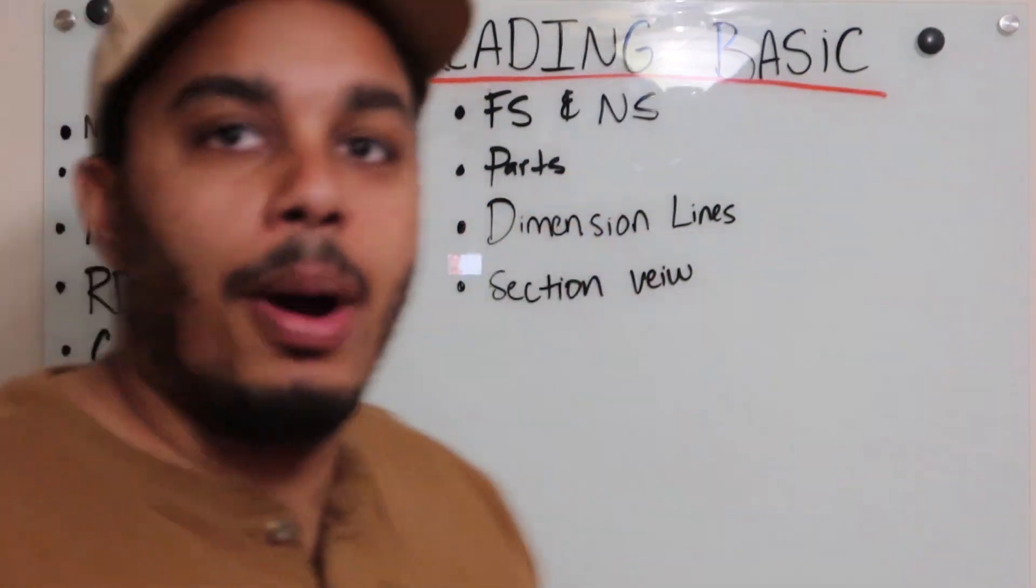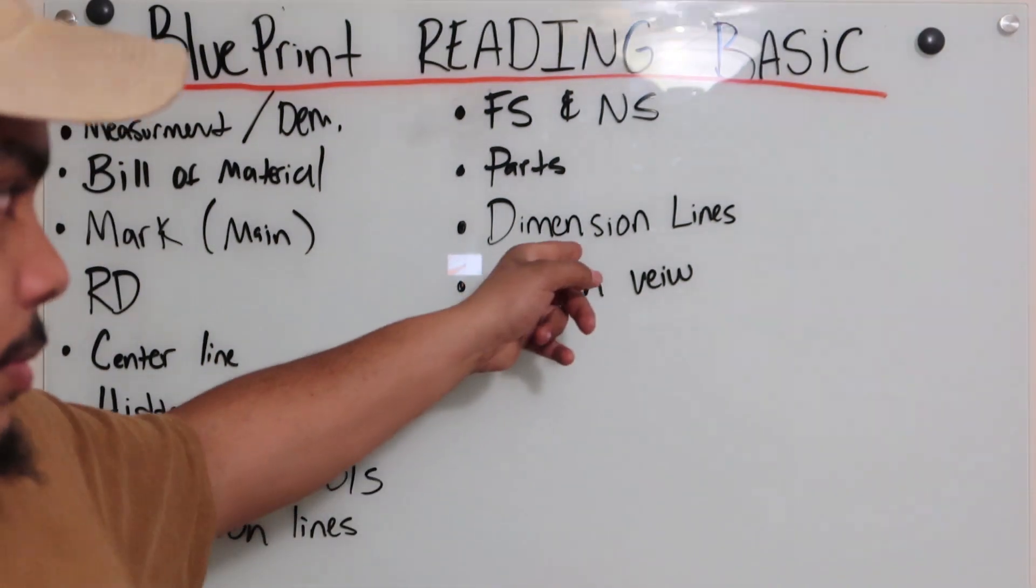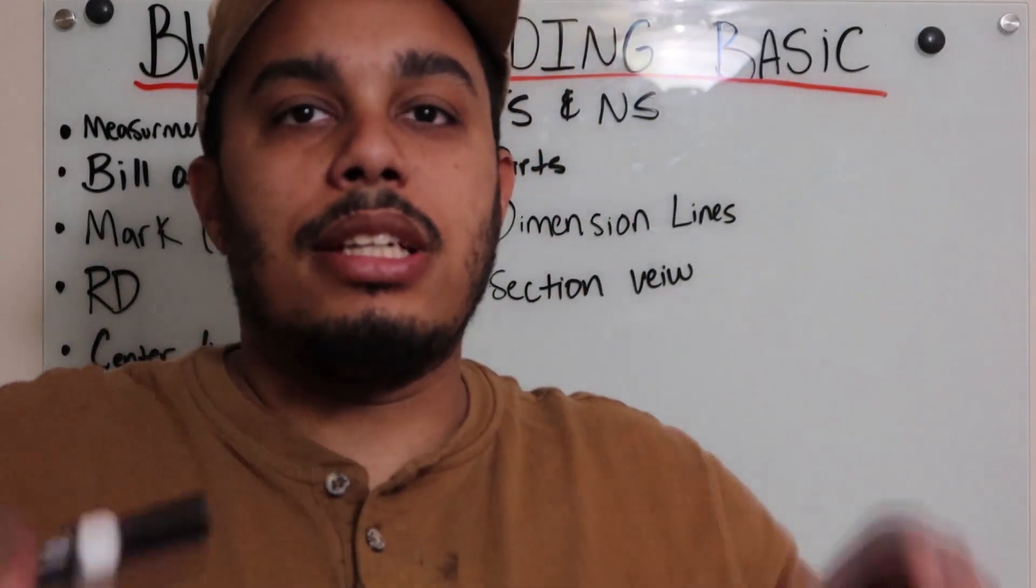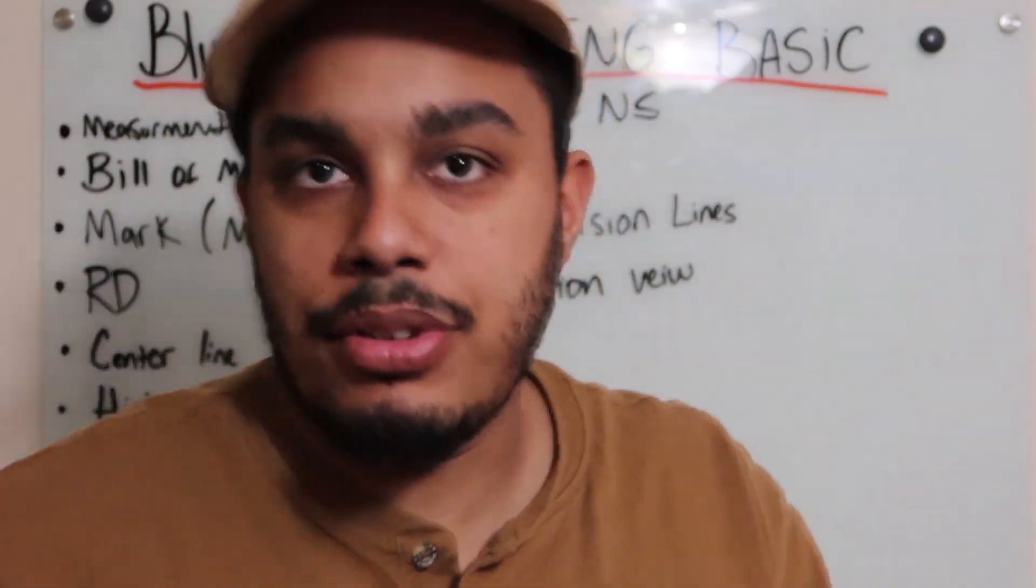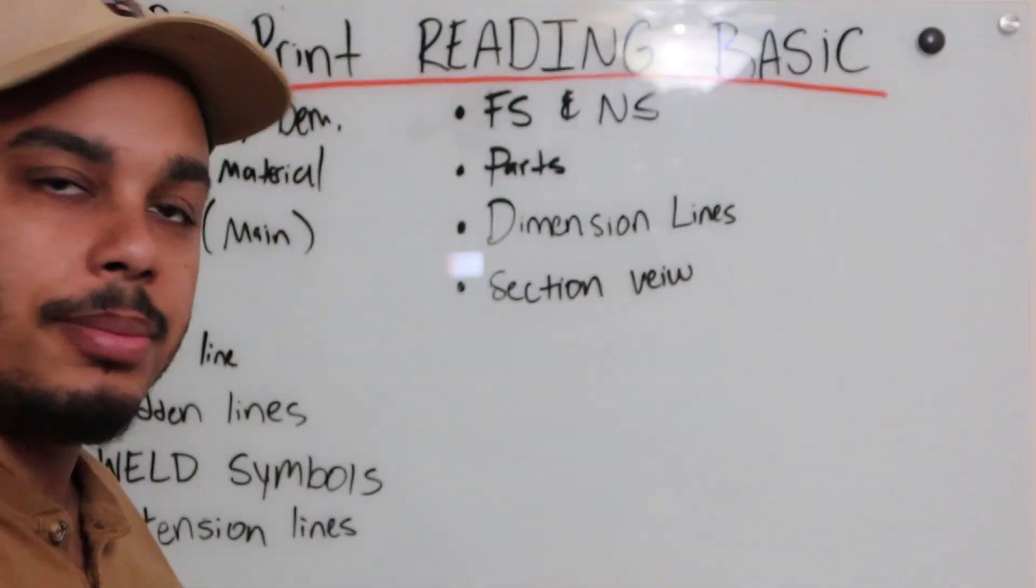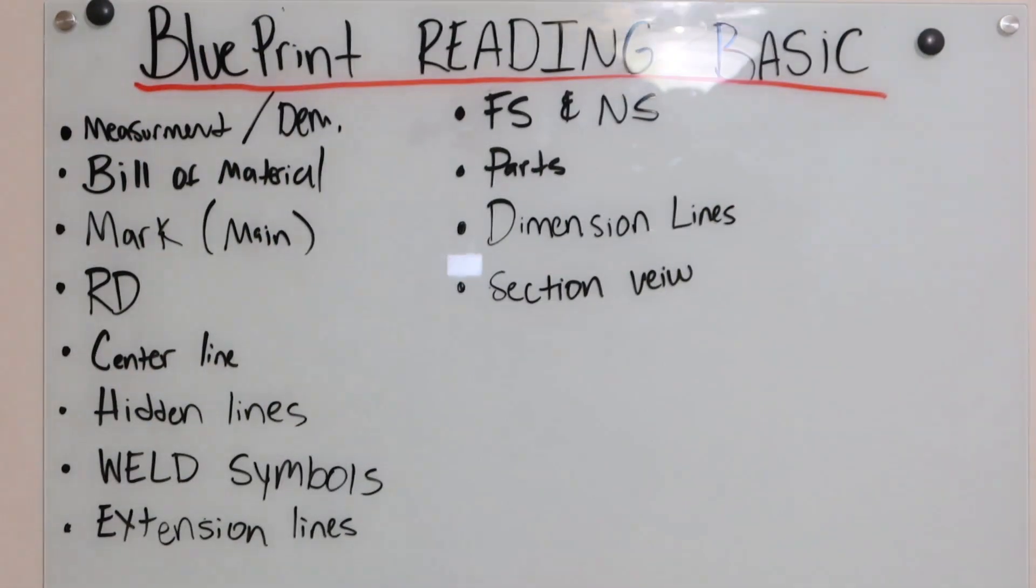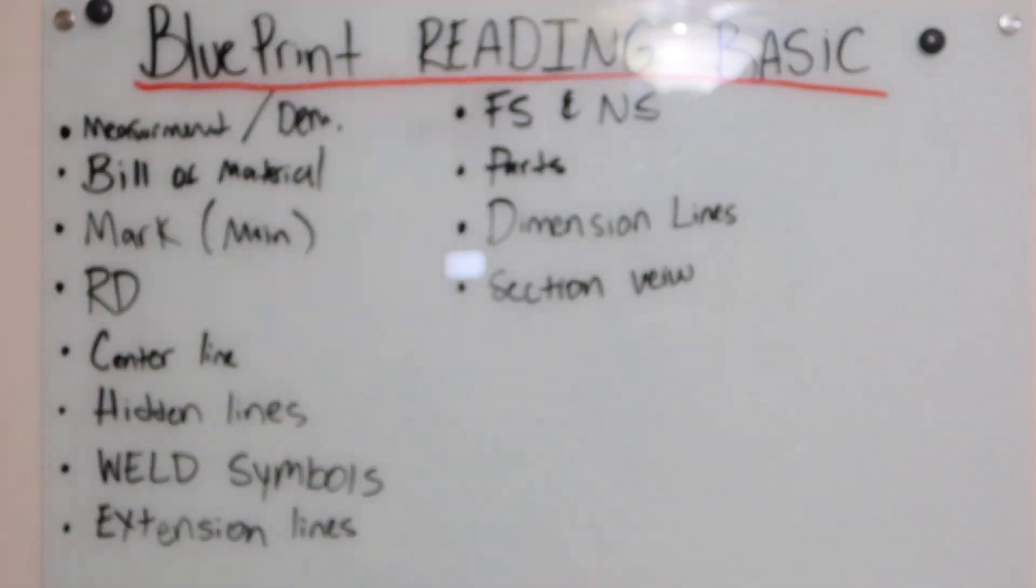Parts - it tells you the parts, the name of the parts. Every part has a number and name. Dimension lines and sectional views. Sectional views is where it breaks it apart, and if you're looking at this section, it'll blow it up and show you everything you need to know as far as the measurements and stuff. So these are what I feel are the basics of all blueprint reading, these right here.